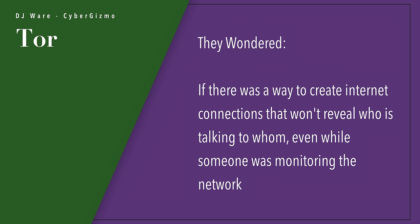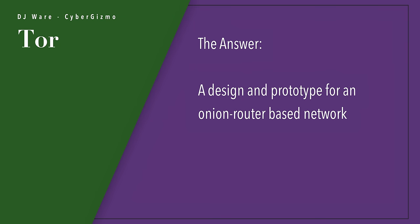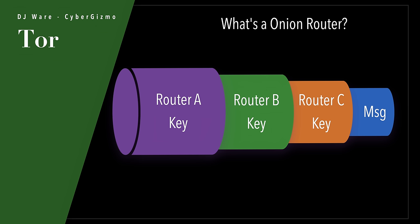What they were trying to find out was whether there was a way to create an Internet connection that won't reveal who is talking to whom, even while someone was monitoring the network at the lowest possible level — even at the packet level. The answer was they came up with a design and a prototype for something they called the Onion Router-Based Network. When you create a message, it is encapsulated with three different layers.